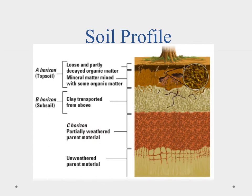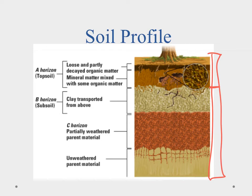Taking a cross section of soil, we can break it into different regions — primarily four. The very top layer is the A horizon, called topsoil. This is the primary soil we're familiar with: loose, partly decayed organic matter mixed with mineral matter. Going down to the B horizon, we notice clay that's transported down from above — clay and sediment settle into the B horizon.